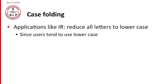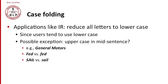So for example, in information retrieval, we generally reduce all letters to lowercase since users tend to use lowercase — with some small exceptions. For example, if we see uppercase in the middle of a sentence like 'General Motors,' we might want to keep the case. And this matters for distinguishing the verb 'fed' from the Federal Reserve Bank with a capital F.